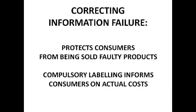Moving on now to correcting information failure. The government tries to protect consumers from being sold faulty products through things like trading standards. We also have compulsory labelling which informs consumers of the actual costs of consumption — for example, food labels showing calories and fat content so consumers are aware of the true cost of what they're eating. Obviously you're never going to have absolutely perfect information, but you can get close, like with computers where people compare hard drive space and so on. The government tries to make sure all of this information is out there and accessible to the consumer.